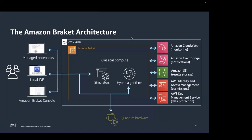Let me talk about the architecture of Amazon Braket. This big box represents the AWS cloud; Amazon Braket is part of it and has certain simulators based on classical computer resources. The Braket service interacts with other AWS services for monitoring, notification, storage, and permissions. The quantum hardware is not part of the AWS cloud — it sits outside, provided by third-party providers.